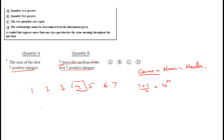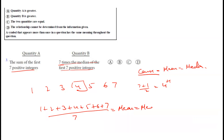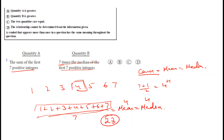The sum 1 + 2 + 3 + 4 + 5 + 6 + 7 = 28. Seven times the median: 7 × 4 = 28. Both quantities equal 28, so option C is correct.